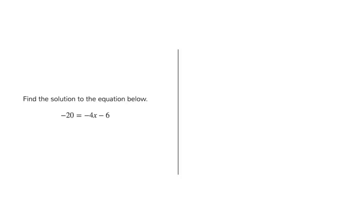Find the solution to the equation below. Negative 20 equals negative 4x minus 6. Basically, we need to use our properties of equality to isolate and find the value of x.